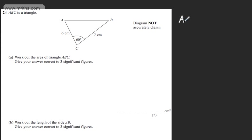If you look in the formula book, the area is given as one-half AB sin C. So if we say that A is going to be 6, B is going to be 7, and C, the angle C, is going to be 60 degrees. So we can say that the area is going to be one-half multiplied by 6 multiplied by 7 multiplied by the sin of 60 degrees.